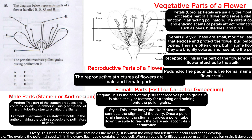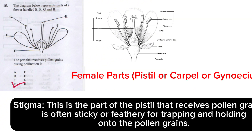The question asked which part receives pollen grains during pollination. Our answer is the stigma — it is the part of the pistil that receives pollen grains. That corresponds to label H, so our answer is choice D.